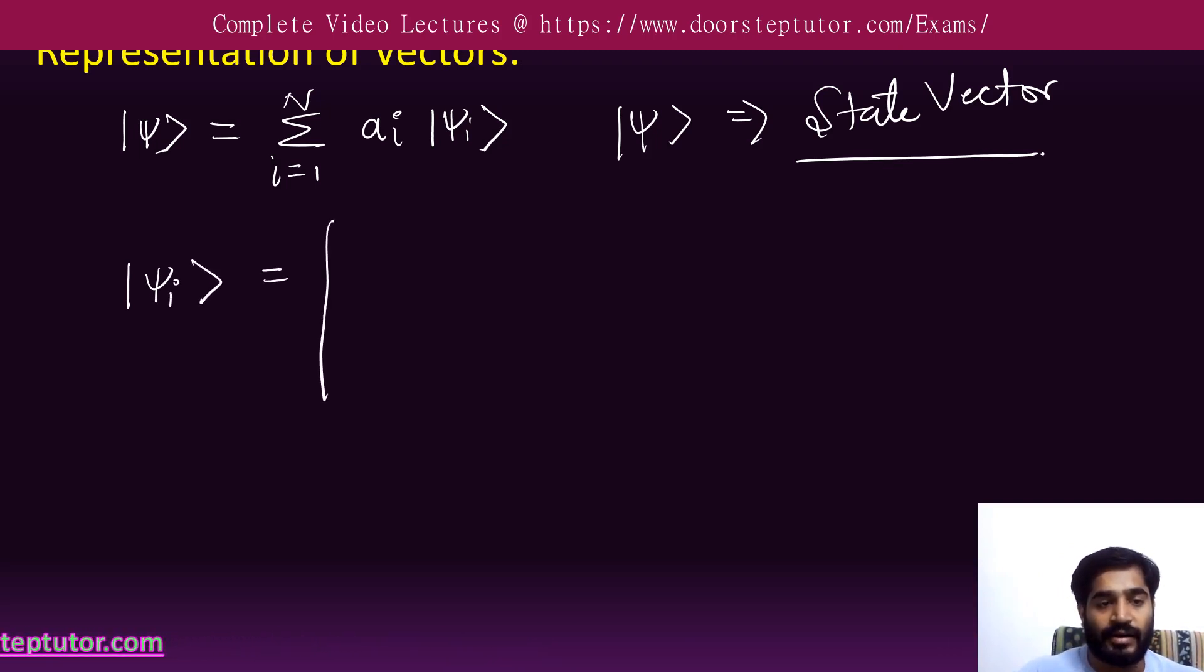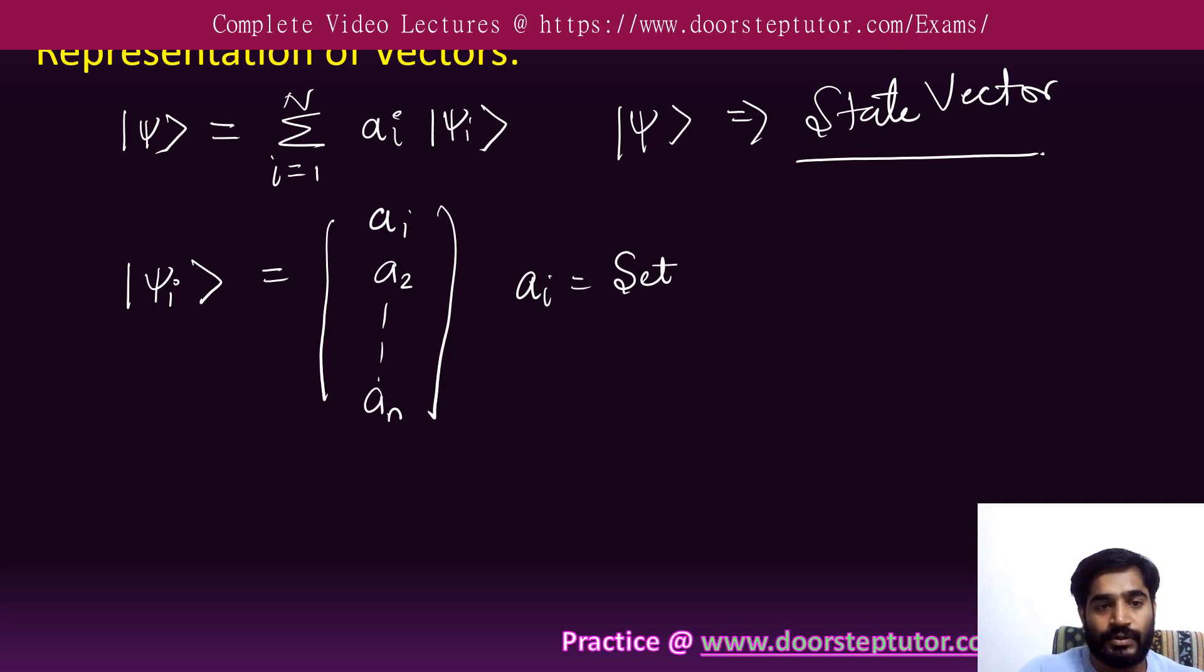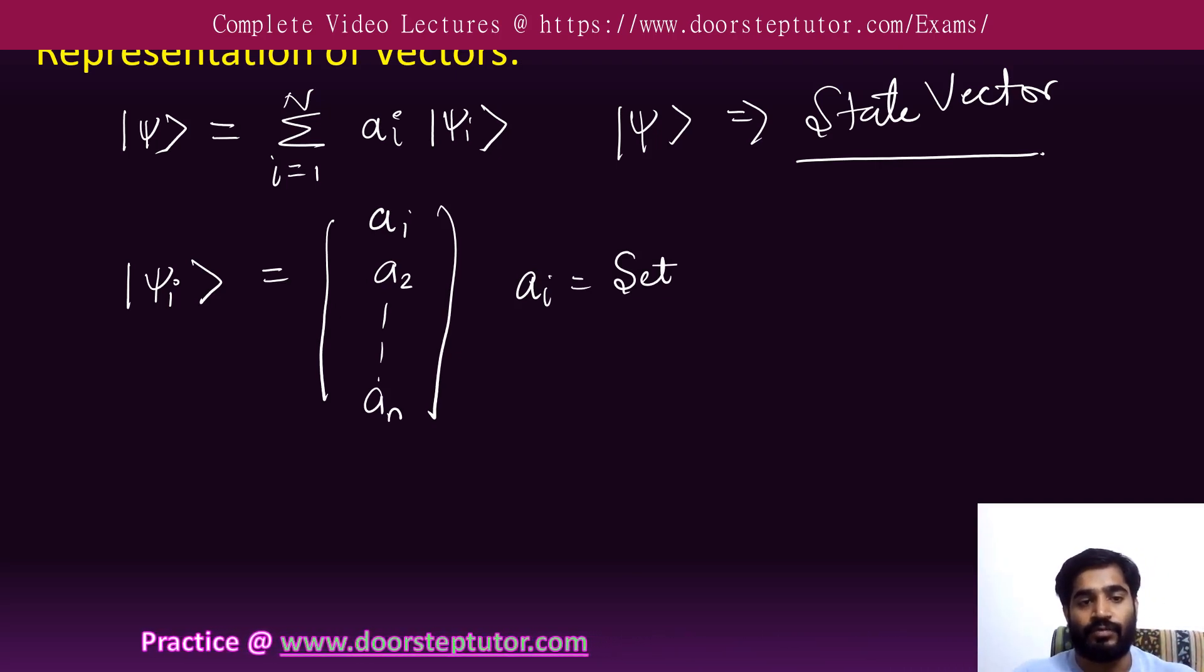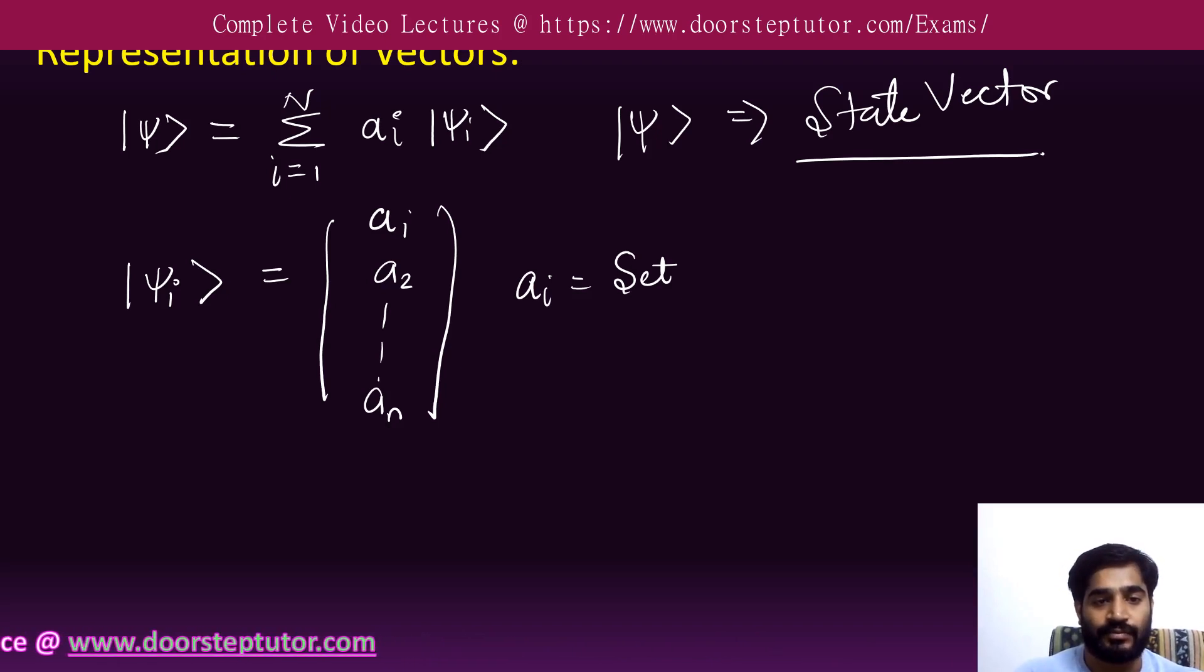How we represent this ket function as a matrix? This is the representation: a1, a2, up to an. This way we can represent it, where ai is a set coefficient, a state coefficient of a column vector.